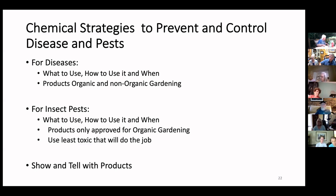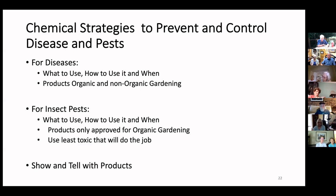In terms of insecticides, I only use those approved for organics and the least toxic ones. These include horticultural oils like neem oil, horticultural soaps, and natural extracts like pyrethrins that come from daisies. For chewing insects I use spinosad and BT. Spinosad is bacteria-based and excellent even on adult beetles and chewing insects. BT is particularly good on caterpillars, especially young caterpillars.